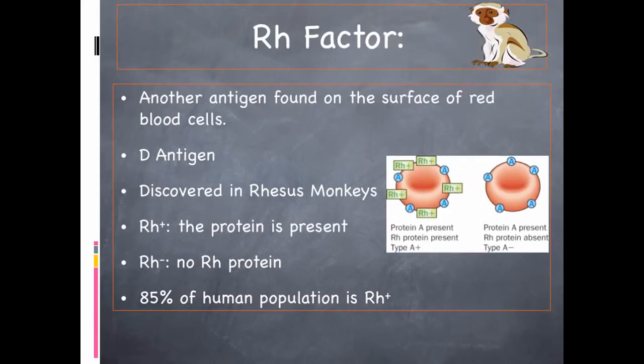Here's just another visual. It shows a person with blood type A — they have the A antigens on the outside of the red blood cell. If they're A positive, you can see they have the Rh protein on the outside. If they're A negative, they do not.